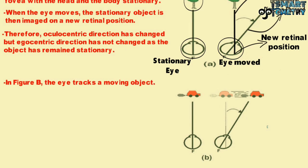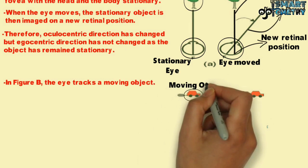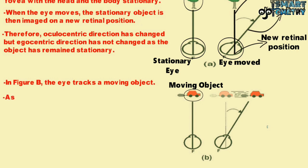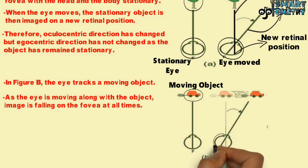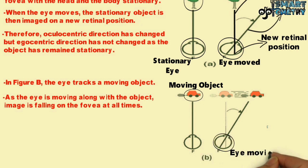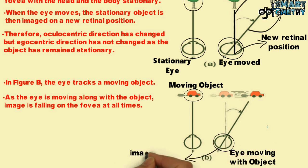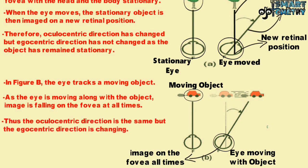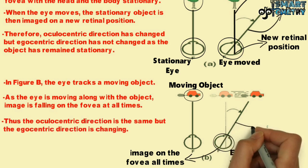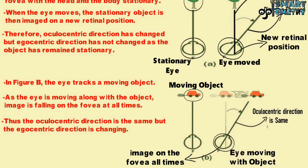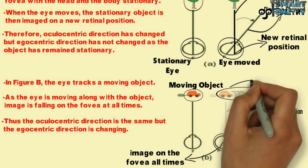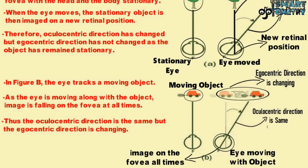In figure B, the eye tracks a moving object. The image of the moving object is focused on the retina at point F. As the eye moves along with the object, the image falls on the fovea at all times. Therefore, the oculocentric direction is the same but the egocentric direction is changing. So, the oculocentric direction of the moving object is the same while the egocentric direction is changing.